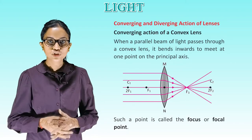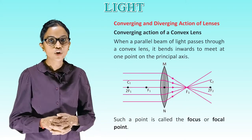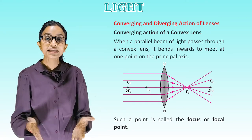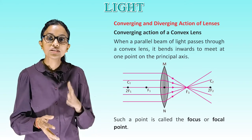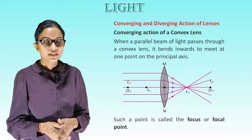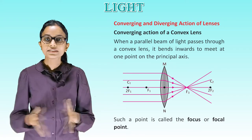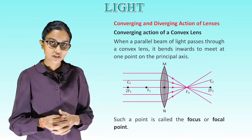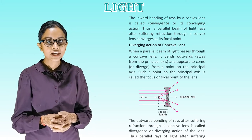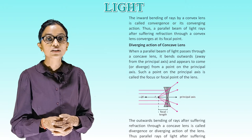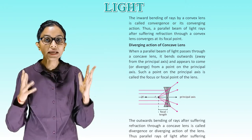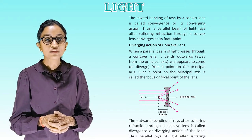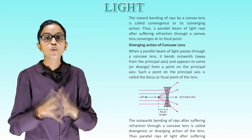Converging and diverging action of lenses. Converging action of a convex lens: when a parallel beam of light passes through a convex lens, it bends inward to meet at one point on the principal axis. Such a point is called the focus or focal point. See this diagram for better understanding. The inward bending of rays by a convex lens is called convergence or its converging action. Thus, parallel rays after passing through a convex lens converge at its focal point.